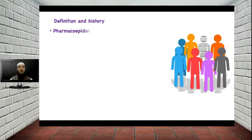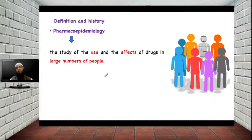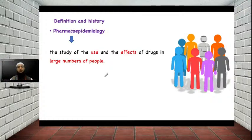Let us see the definition and history of pharmacoepidemiology. Pharmacoepidemiology is basically the study of use and effect of drug in the large number of population. We have seen in the last session about clinical trials and the drug discovery process where we study the effect of drug in a limited number of population — from phase 0 study with only 15 people up to confirmatory studies with about a thousand participants.